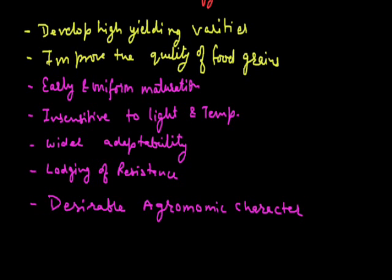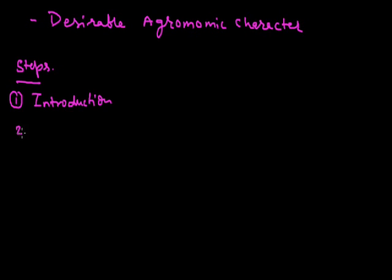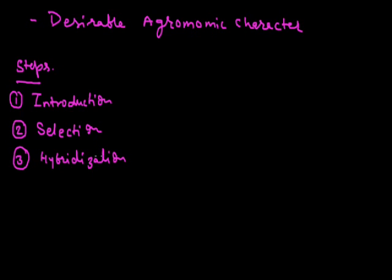What are the steps used for genetic manipulation? There are three main steps. The first step is introduction — in which we identify or introduce new varieties, or varieties which can be developed into new varieties. Introduction is the selection of superior indigenous varieties.